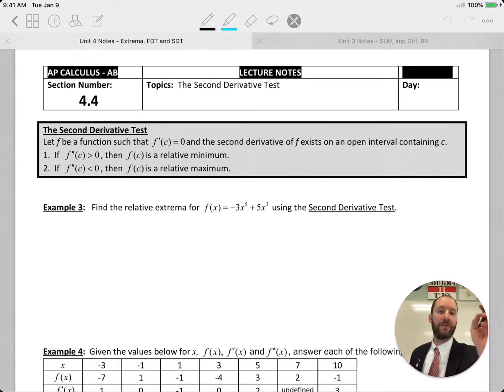So the second derivative test, when we did the first one, it's our test using the first derivative. This test uses the second derivative to also find the same outcome: maximums and minimums.